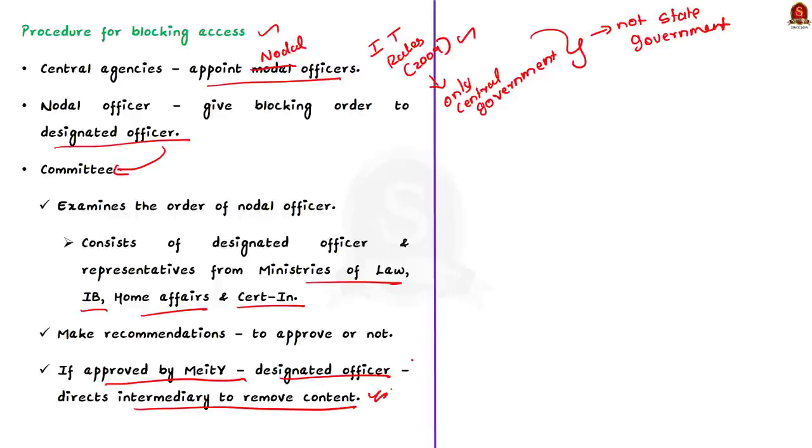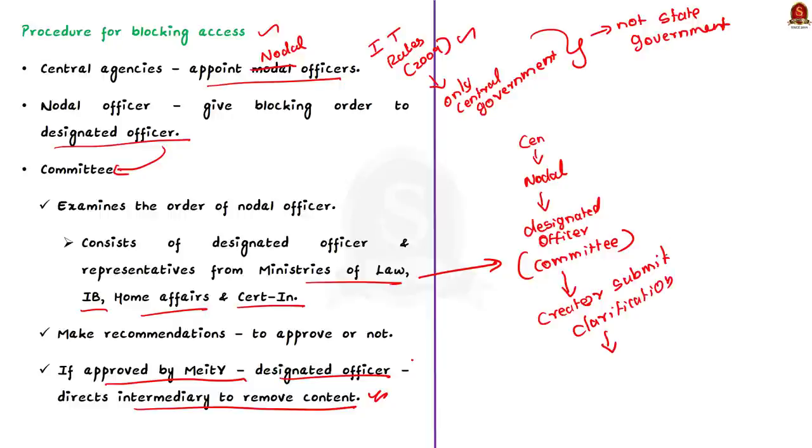If this recommendation of the committee is approved by the Ministry of Electronics and Information Technology, then the designated officer of the central government can direct the intermediary to remove the content. And that's all about this article discussion. With these key takeaway points, let us move on to the next article discussion.